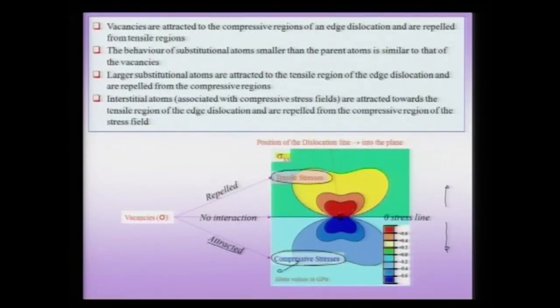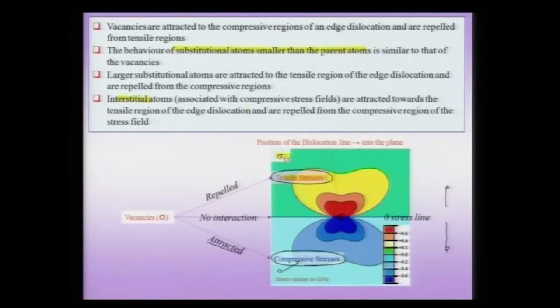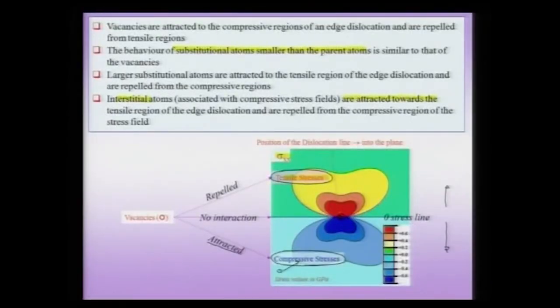The behavior of smaller substitutional atoms is also similar to that of vacancies. Larger substitutional atoms are associated with compressive stress fields and will be attracted towards the tensile region of the dislocation. Interstitial atoms are typically larger than the voids — for instance, the tetrahedral and octahedral voids in FCC crystals — and are therefore associated with compressive stress fields, along with possible shear stress fields. These interstitial atoms are therefore attracted towards the tensile region of the edge dislocation and repelled from the compressive region.